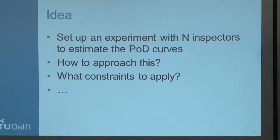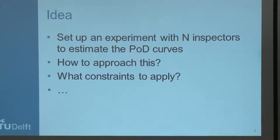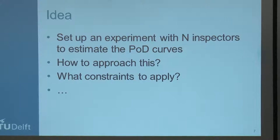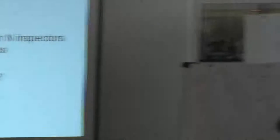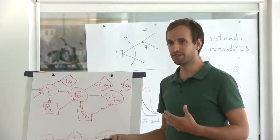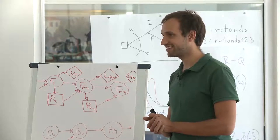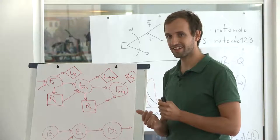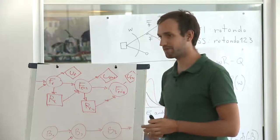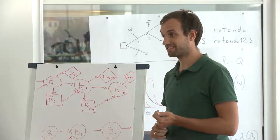My idea is to set up an experiment with inspectors — probably about 30 — to see how close they get to the eventual destructive test result at a test site. The thing I wanted to bring forward as a discussion topic was: how should I approach this, what constraints should I apply, and can anyone share experiences from their own work that I can use to further develop this idea?